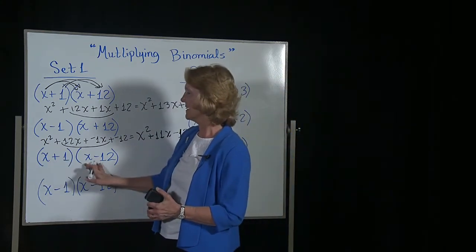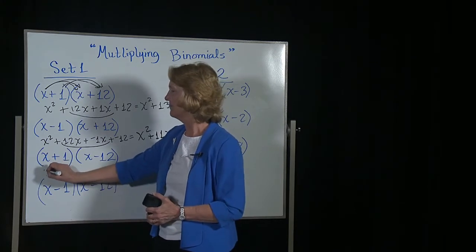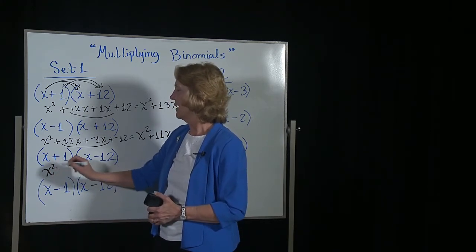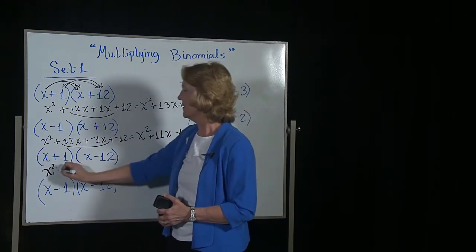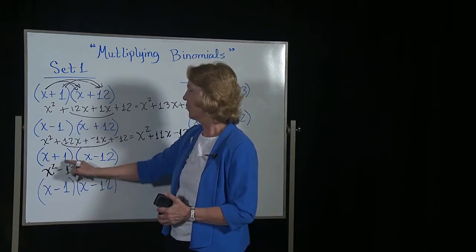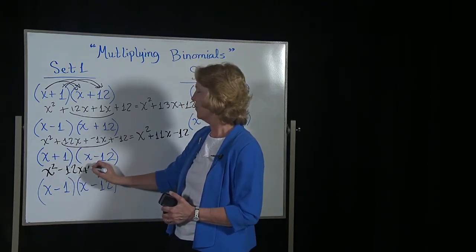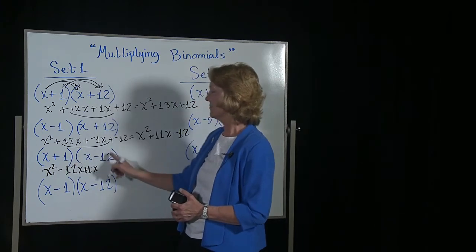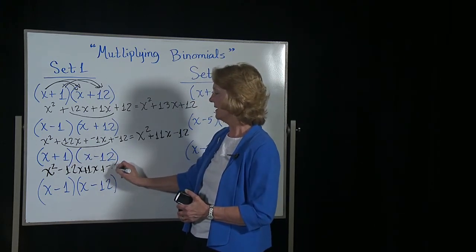Next one. x times x, we get x squared. x times negative 12, we get negative 12x. 1 times x, we get 1x. 1 times negative 12, we get a negative 12.